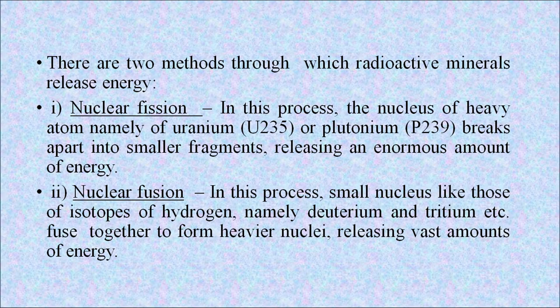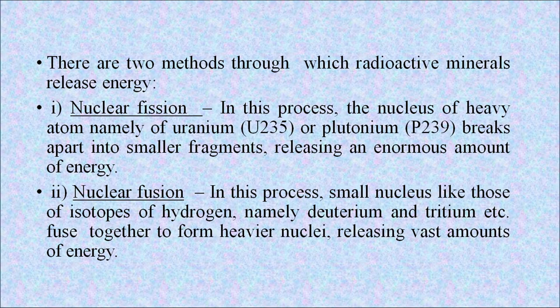In nuclear fission, the nucleus of a heavy atom — namely uranium U-235 or plutonium Pu-239 — breaks apart into smaller fragments, releasing an enormous amount of energy. In nuclear fusion, small nuclei, like those of isotopes of hydrogen — namely deuterium and tritium — fuse together to form heavier nuclei, releasing vast amounts of energy.